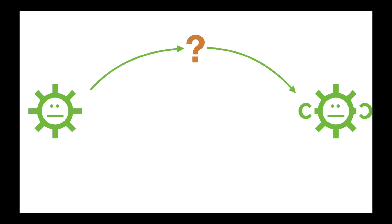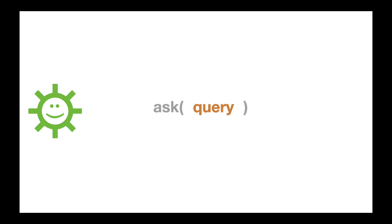We're going to start with the premise that there are a couple of processes, or maybe modules or functions. One of the processes has a query — has something that it wants — and it basically composes the query and then asks the other process or module, and that other process or module returns whatever it is. This is essentially what we're going to do with Ecto, but there are a couple of things that are going to complicate this flow. When I say 'I want it,' I'm really talking about a query, and there's some kind of API that's going to allow me to ask — maybe that's repo.all or repo.first.